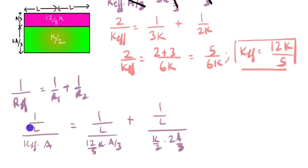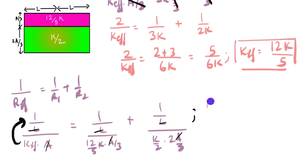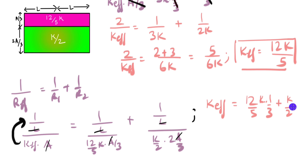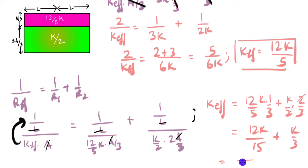We cancel L and area throughout. K_effective equals 12K/5 times 1/3 plus K/2 times 2/3. This simplifies to 12K/15 plus K/3. Taking LCM of 15, this becomes 12K plus 5K over 15, which equals 17K over 15. So the equivalent thermal conductivity of the entire combination is 17K divided by 15.